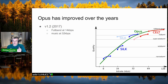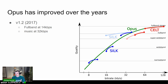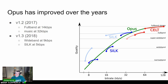Over the years Opus improved considerably. In version 1.2 in 2017, roughly five years after release, full band audio was achieved down to 14 kbps, almost eliminating the need for the wideband SILK variant. For CELT, super-wideband music-style audio reached down to 32 kbps. Version 1.3 in 2018 pushed the envelope further — wideband audio at just 9 kbps and SILK-style audio in narrow band down to 5 kbps. That was a considerable achievement.